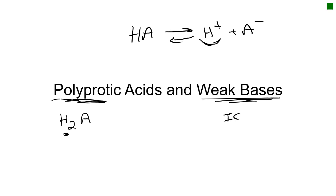For weak bases, we're going to do an ICE chart, look up a Kb — it's a base, not an acid — solve for X, and realize that X is the concentration of hydroxide, and go from there.